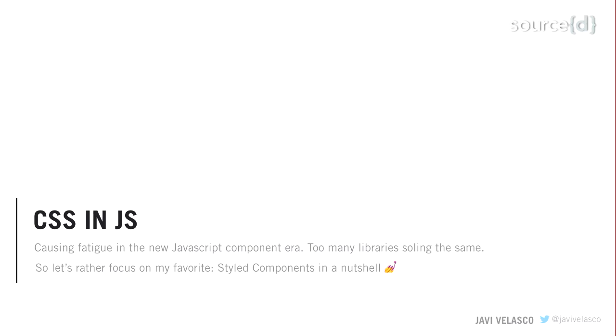CSS in JS is causing huge fatigue — there are like 20 or 30 different libraries trying to solve the same problem. To explain how CSS in JS can fix the theming and customization issue, I'm going to focus on styled-components, because that's my favorite solution so far — it has the best API right now.